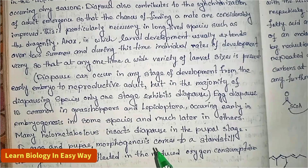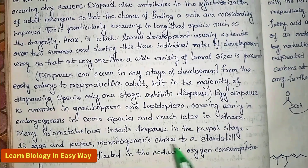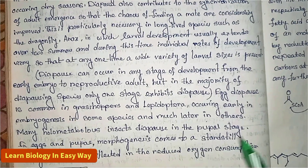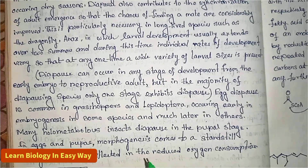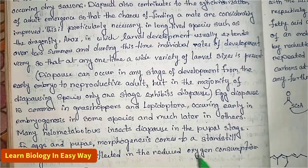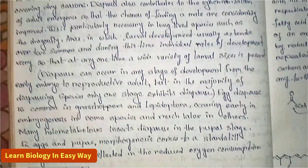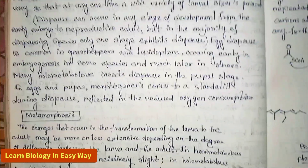Many holometabolous insects diapause in eggs and the pupal stage. During diapause, morphogenesis comes to a standstill, which is reflected in the reduced oxygen consumption.